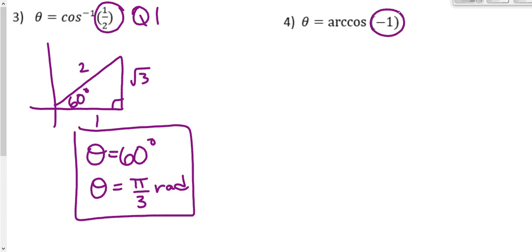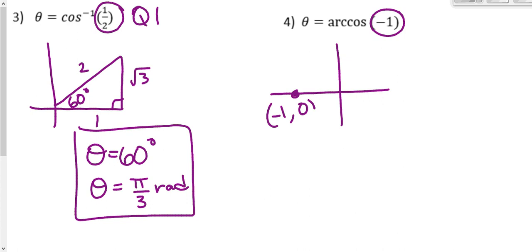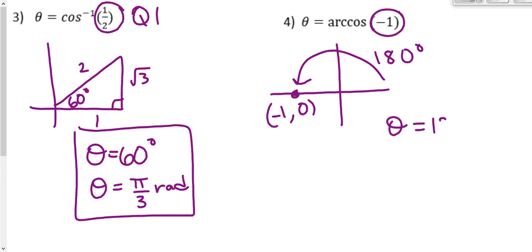Number 4. Inverse cosine would be negative in quadrant 2, but if it's negative 1, that's a quadrantal angle. If you picture where cosine is negative 1, that's all the way over at 180 degrees. So we don't have a reference triangle for that. The answer is 180 degrees, or pi radians.